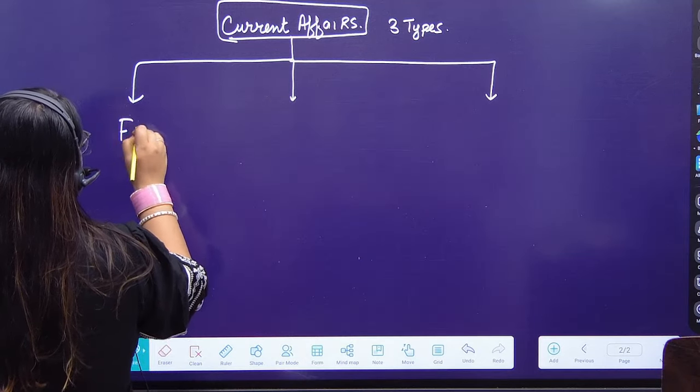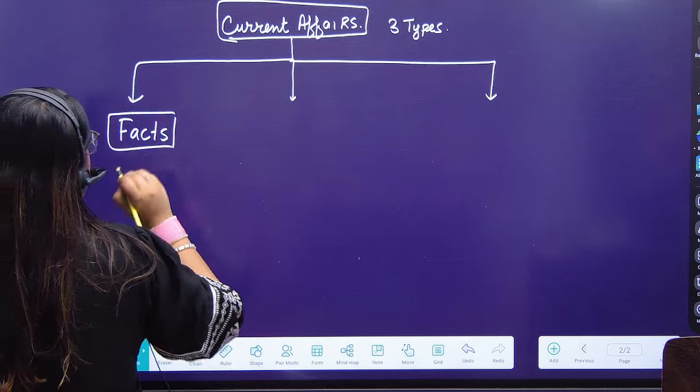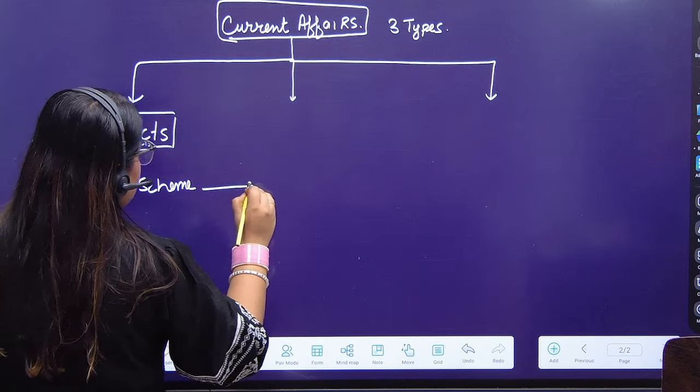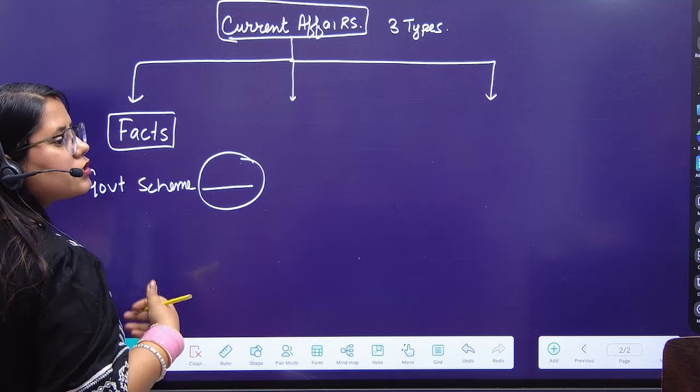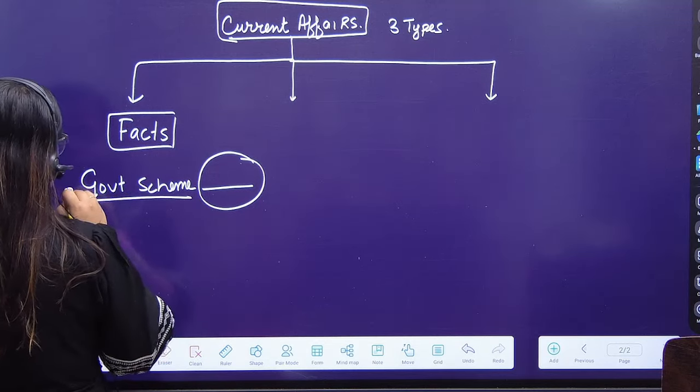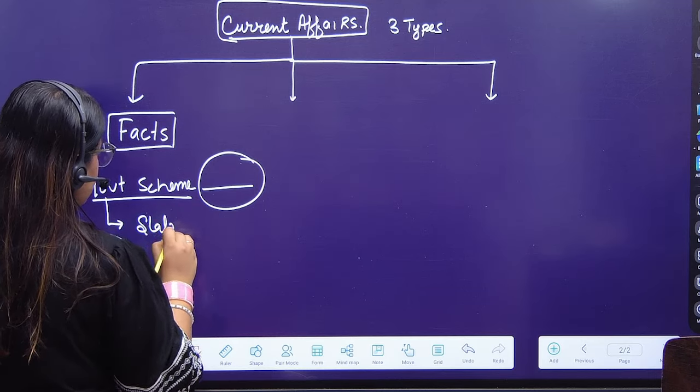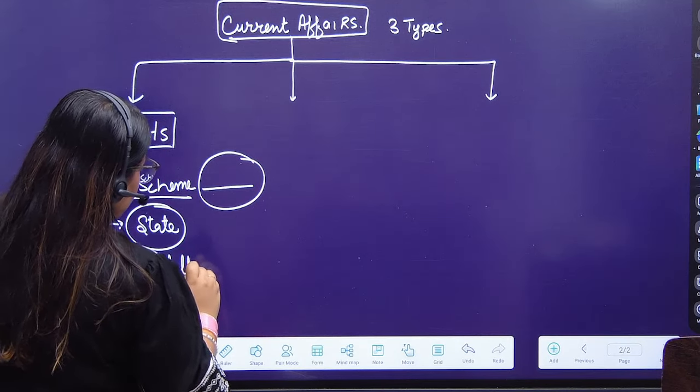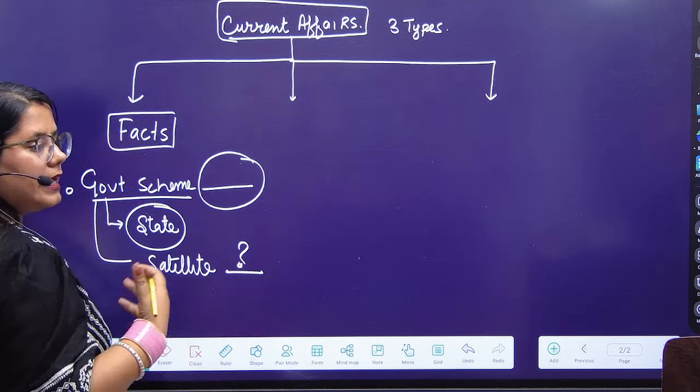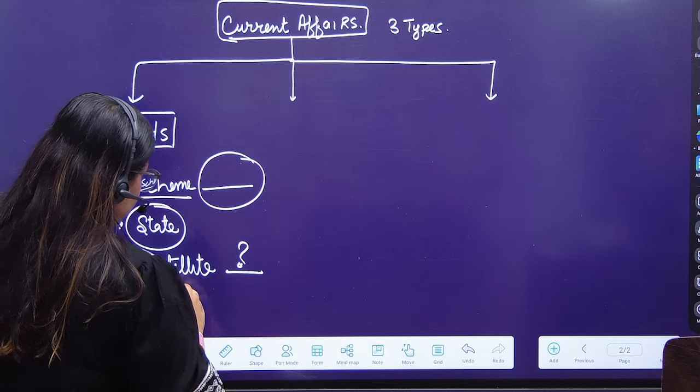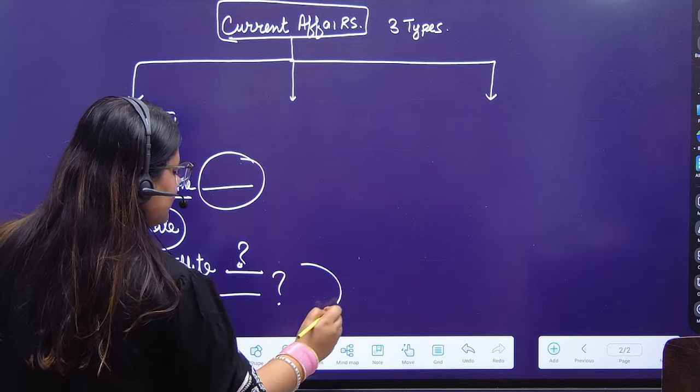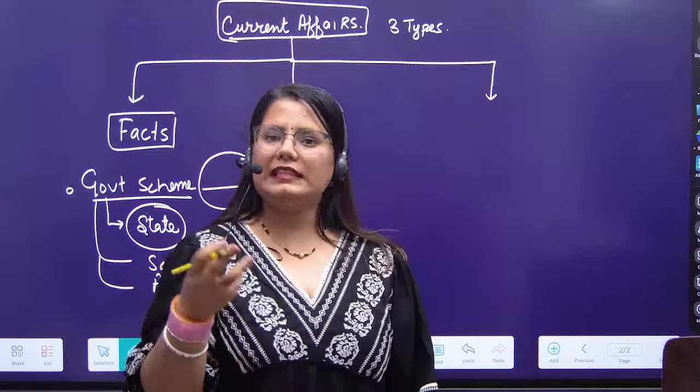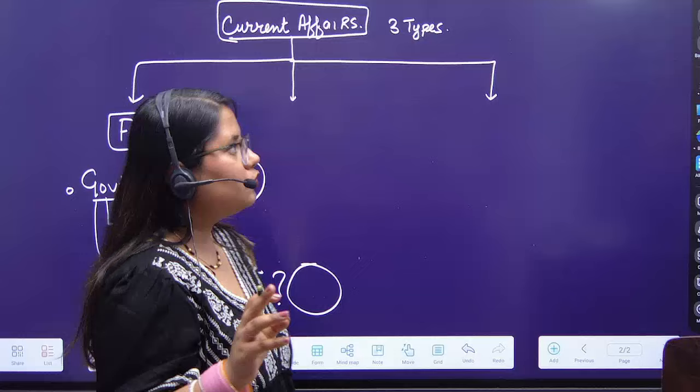The first type of question is based on many facts. For example, there is a government scheme and in that scheme the examiner has asked how much money is in the scheme, or which state has launched the government scheme. Factual questions include satellite launches, awards - who received which award. Simple facts you must remember, important days you must remember when they occur. This type of question.